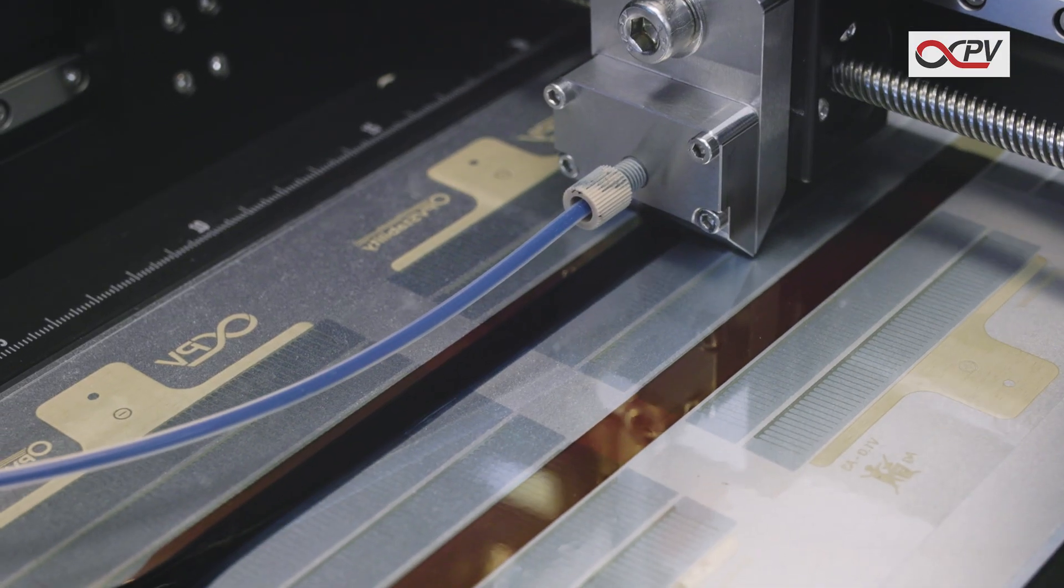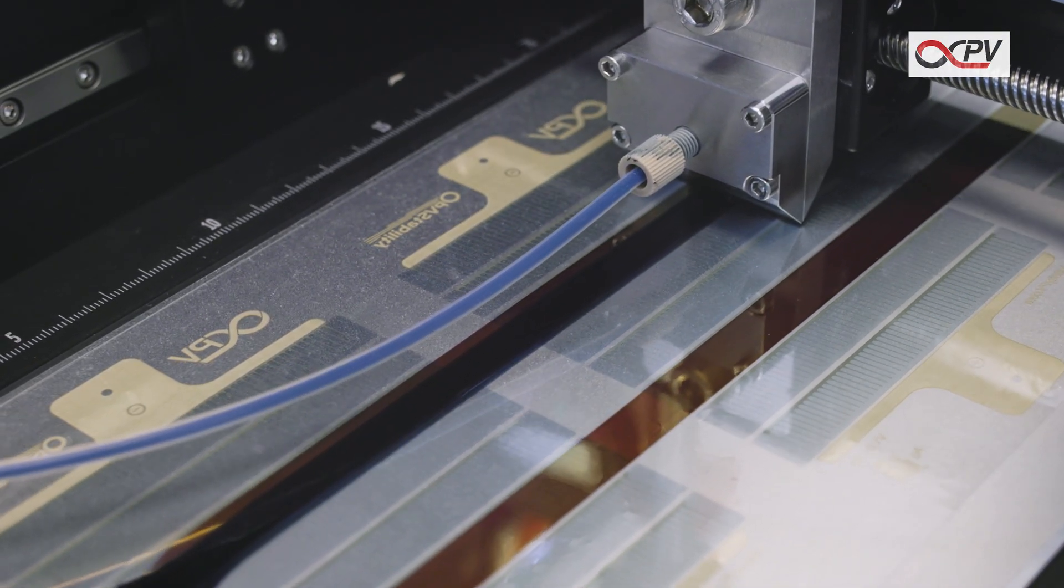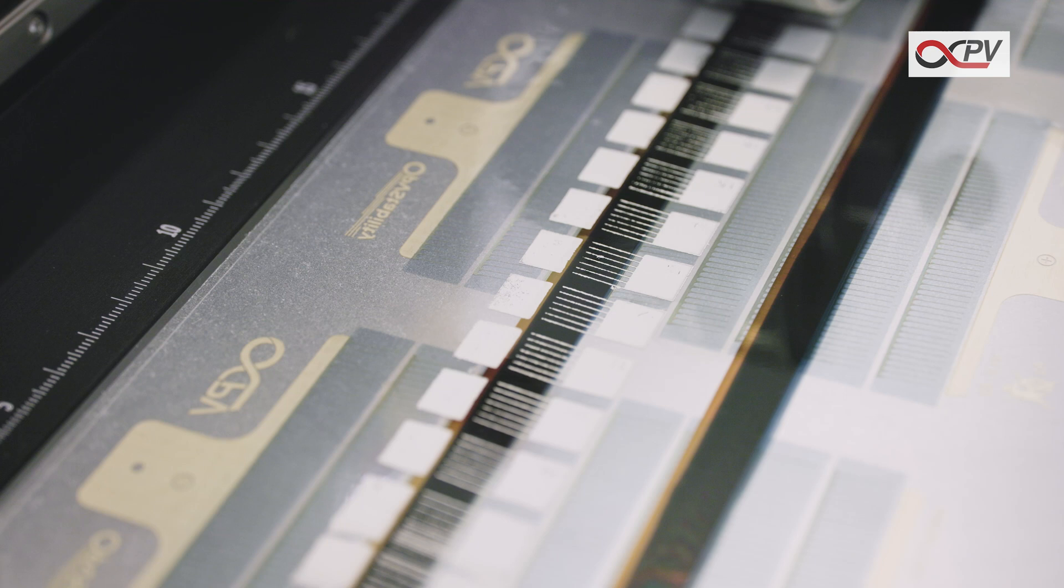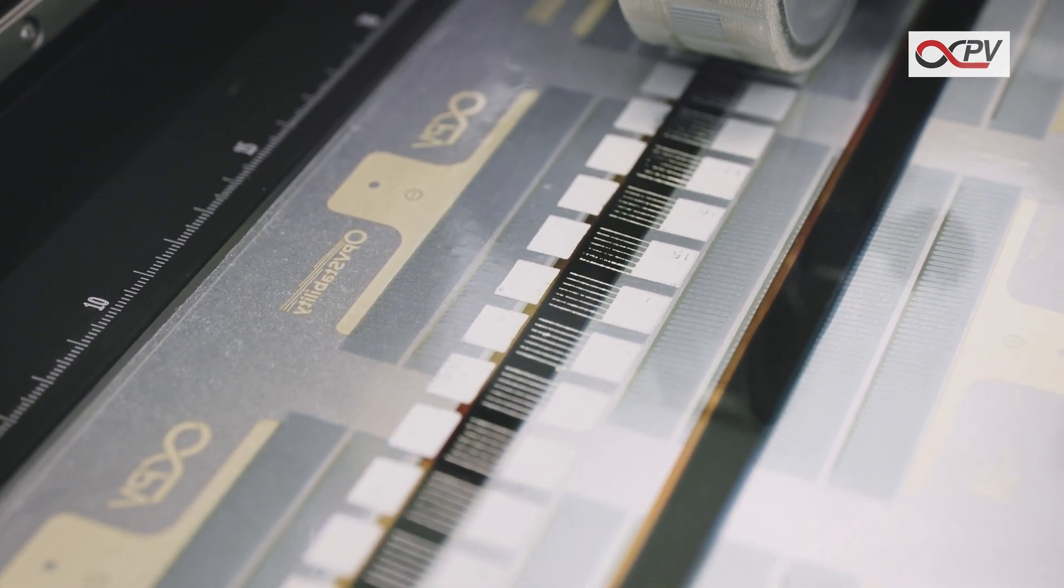Once the two layers are complete, detach the Slot Dye Head and clean it. Now it's time to print silver for the processing of the back electrode.